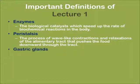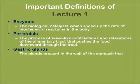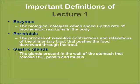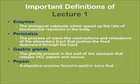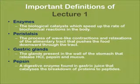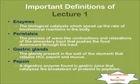Gastric glands — the glands present in the wall of the stomach that release HCl, pepsin and mucus for digestion. Pepsin — a digestive enzyme found in the gastric juice that catalyzes and breaks down the proteins to peptides.